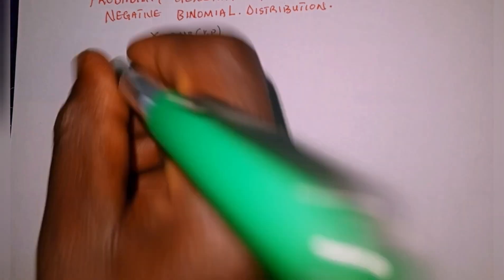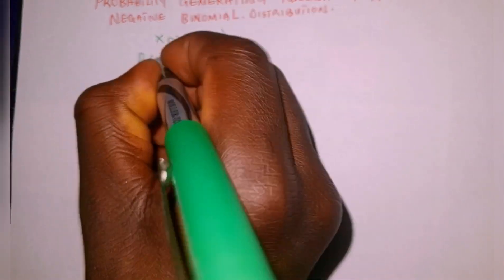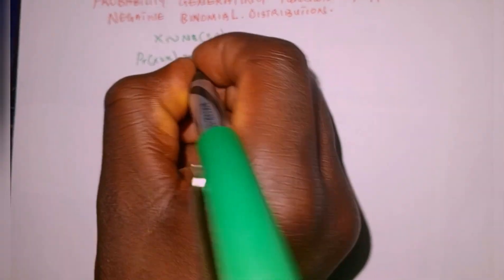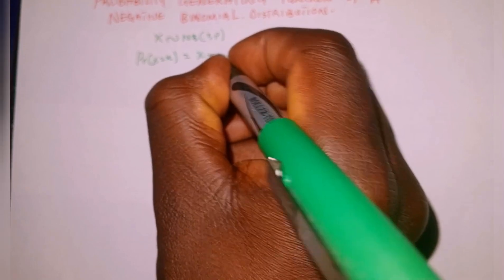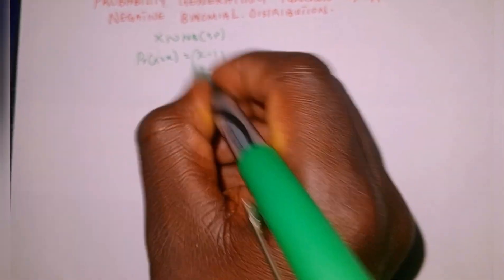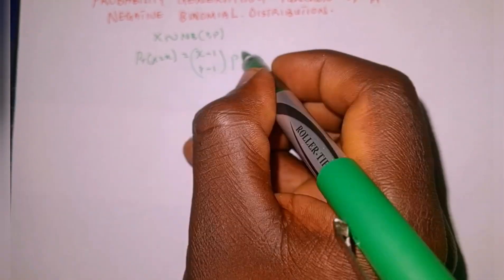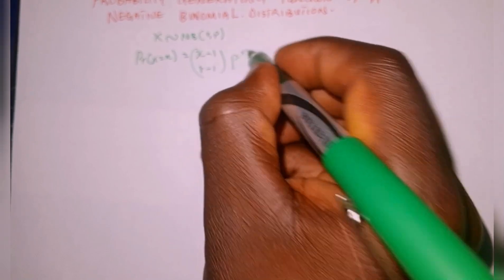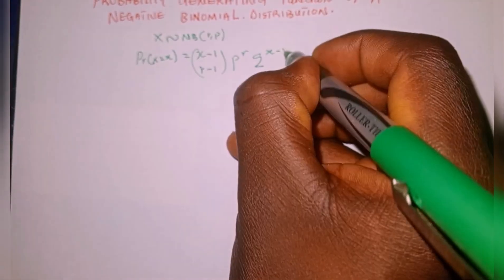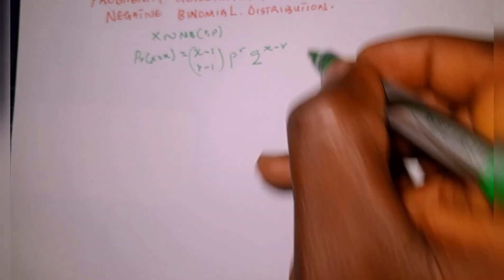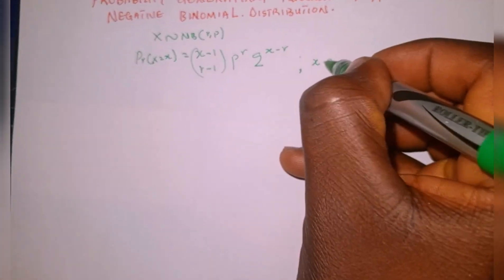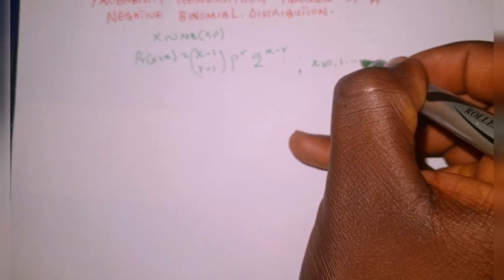The probability function is given as: P(X = x) equals x minus one combination r minus one, multiplied by p raised to the power of r, multiplied by q raised to the power of x minus r, where x ranges from zero, one, up to n.